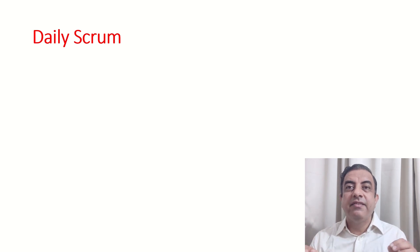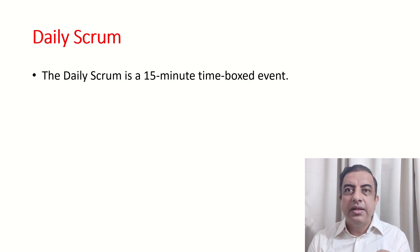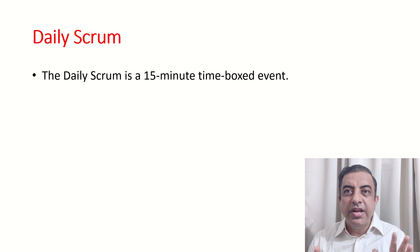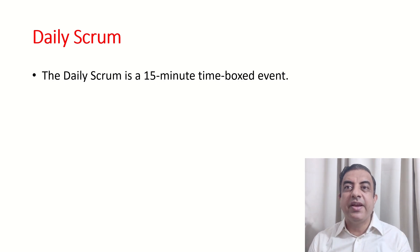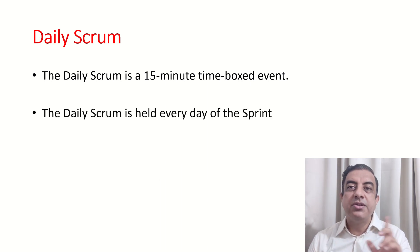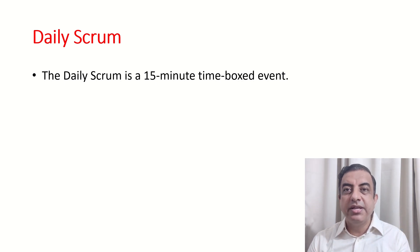Next is Daily Scrum. The Daily Scrum is a 15-minute time-boxed event — not more than 15 minutes. In my experience, some teams have extended this meeting to more than 15 minutes, even to half an hour or one hour. That is not recommended by Scrum; it is strictly a 15-minute time-boxed event.